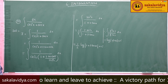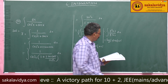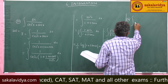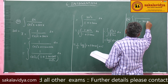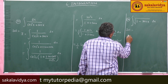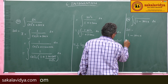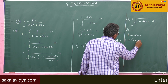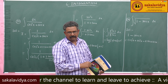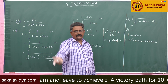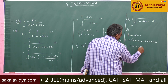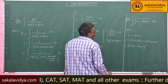34th problem. Evaluate integral of root of 1 minus sin 2x dx. Now, 1 minus sin 2x can be written as cos square x plus sin square x minus 2 sin x cos x. Here 1 is replaced by the trigonometric identity cos square x plus sin square x. This is in the form a square plus b square minus 2ab, which equals cos x minus sin x whole square.